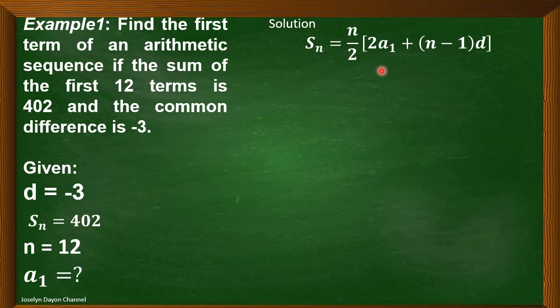This is the formula in finding the sum of the first n terms of an arithmetic sequence. We have to make use of this since we are tasked to find the first term given the sum of the first n terms, common difference, as well as the number of terms.